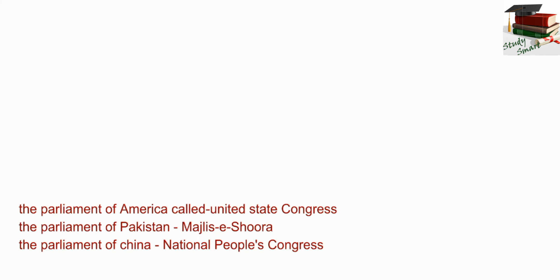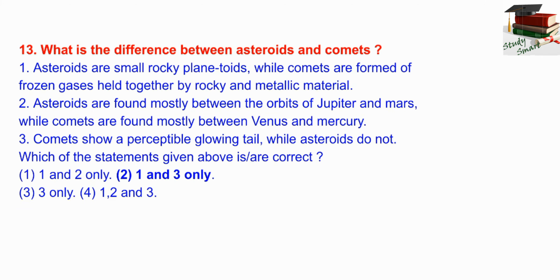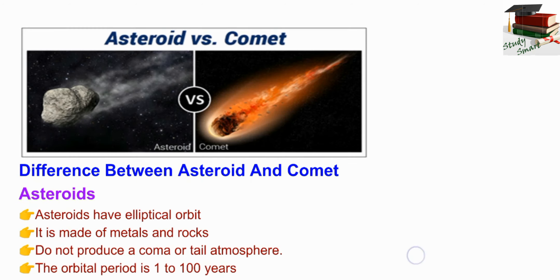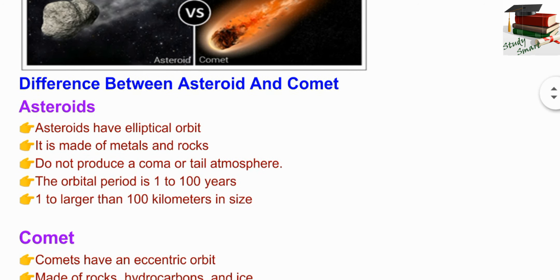Next question: Japan's parliament is also known as the Diet. Now see other countries' parliaments: USA — United States Congress; Pakistan — Majlis-e-Shoora; China — National People's Congress.